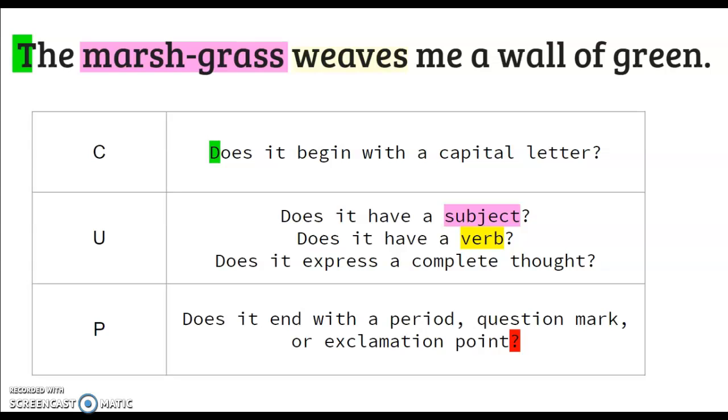Does it have a verb? Weaves. The marsh grass weaves. That's what the marsh grass does. It's the action.